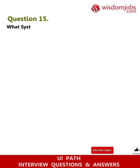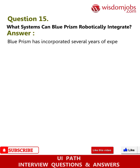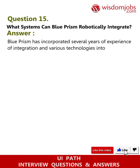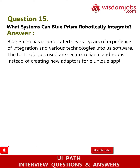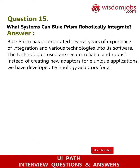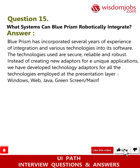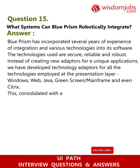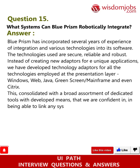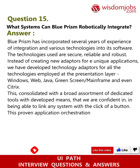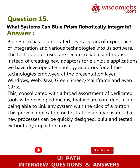Question fifteen: What systems can Blue Prism robotically integrate? Answer: Blue Prism has incorporated several years of integration experience and various technologies into its software. Technology adapters have been developed for all technologies employed at the presentation layer — Windows, web, Java, green screen/mainframe, and even Citrix. This, combined with a broad assortment of dedicated tools, means Blue Prism can link any system with the click of a button, allowing new processes to be quickly designed, built, and tested without any impact on existing systems.